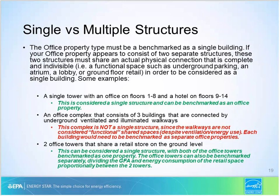The office property type must be benchmarked as a single building and is not eligible to be benchmarked at the campus level — meaning a collection of two or more buildings acting as a single property. Only property types including multi-family housing, K-12 schools, hospitals, and senior living communities are able to benchmark as a campus. We'll go through some examples of acceptable and unacceptable office configurations based on whether they can be considered a single structure.